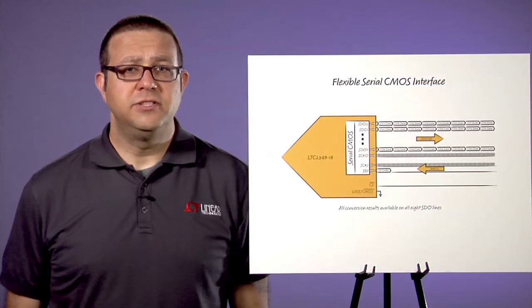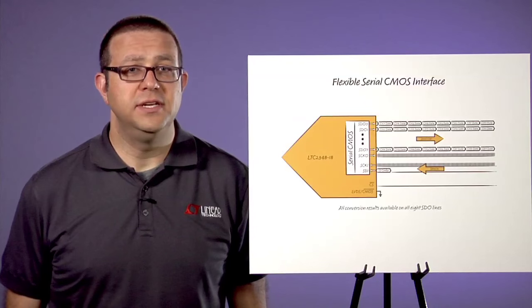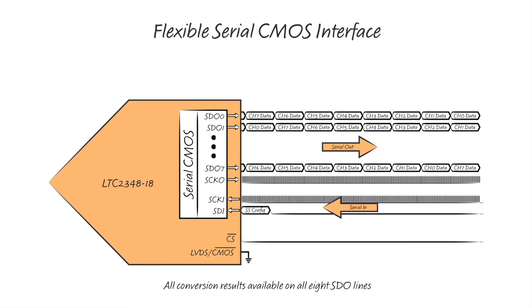Finally, let's shift gears and briefly discuss the LTC 2348-18 digital interface. In CMOS mode, applications may employ one to eight lanes of serial data output, allowing the user to optimize bus width and throughput.